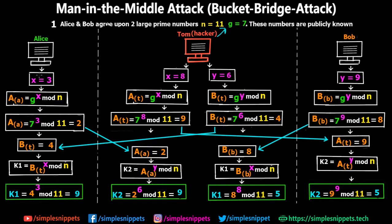Alice has her own private number x=3, not known by Tom or Bob. She calculates her value a_a using the formula g^x mod n, getting a=2. Similarly, Bob has his own private random number y=9, not known by Tom or Alice. Bob calculates his value b_b using the same formula and gets b=8. This follows the standard Diffie-Hellman key algorithm.